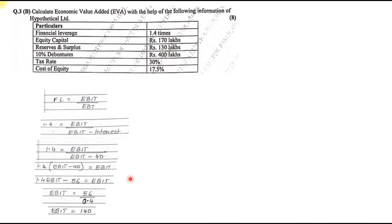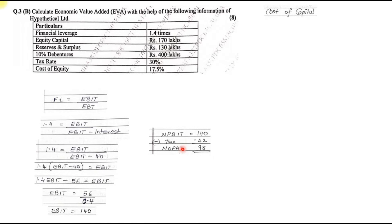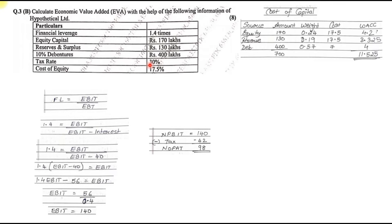Next, find NOPAT — Net Operating Profit After Tax. EBIT = 140, tax at 30% = 42, so NOPAT = 140 − 42 = 98. That is the first value needed for the EVA formula. Now find Weighted Average Cost of Capital (WACC). Prepare a table with equity (170 lakhs), reserves (130 lakhs), and debentures (400 lakhs), giving a total capital of 700 lakhs.